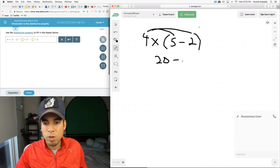It multiplies each one. They become 20 minus 8, then we subtract these and still get the same answer of 12.